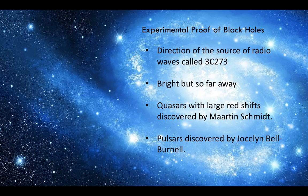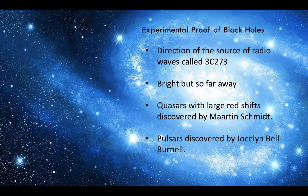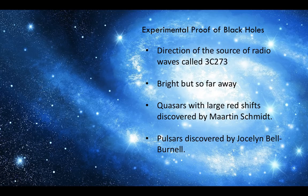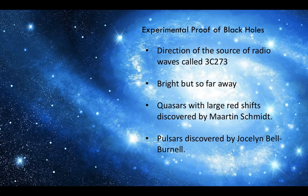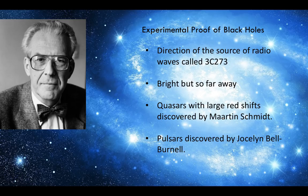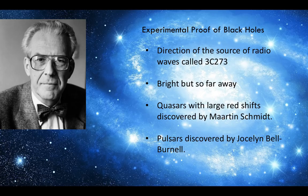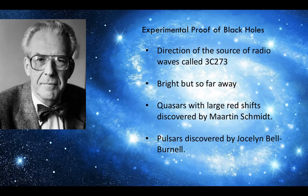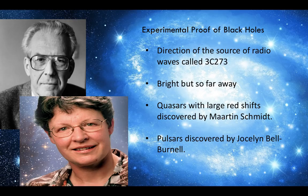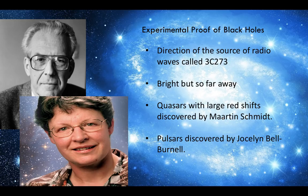Black holes were worked out in great theoretical terms before there was experimental proof for them. One of the earliest experimental proofs came from the astronomer Martin Schmidt, who discovered quasars with very large redshifts. They were very bright but also so far away, suggesting they must have formed by gravitational collapse of entire regions of the galaxy. Later, there was the discovery of pulsars by Jocelyn Bell Burnell. Pulsars are rotating neutron stars, so it was thought that if stars could collapse to such a small size, then it's not impossible for a star to collapse to an even smaller size and become a black hole.